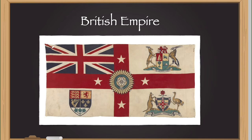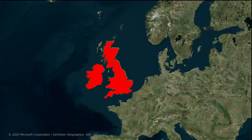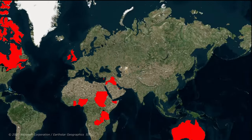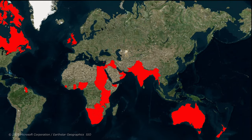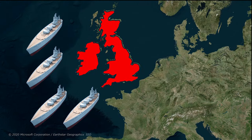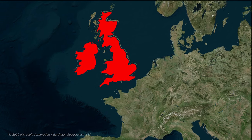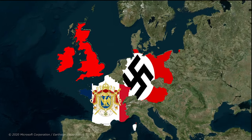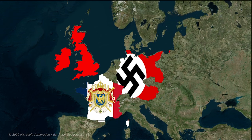The British Empire exemplifies the strategic utilization of its geographical position. Surrounded by water, it became one of the largest empires in history, with territories spanning every continent. This maritime dominance not only facilitated its global reach and influence, but also served as a key defensive mechanism. Both Napoleon and Hitler's ambitions to conquer Britain were stopped by the superior British naval fleet, highlighting the strategy of leveraging geographical strengths to their fullest potential.